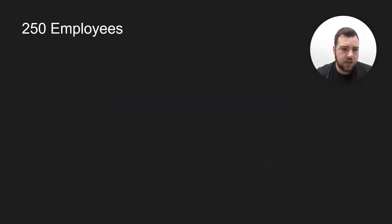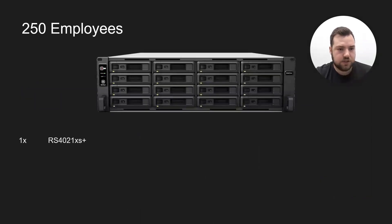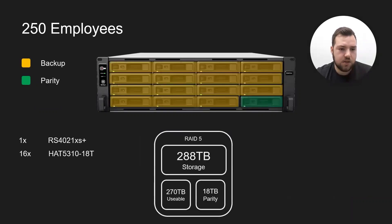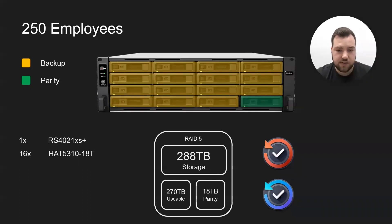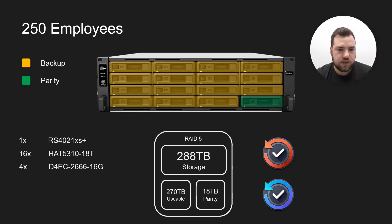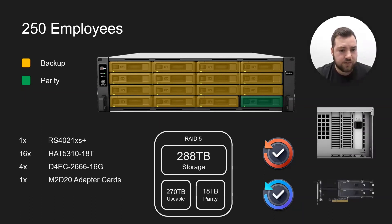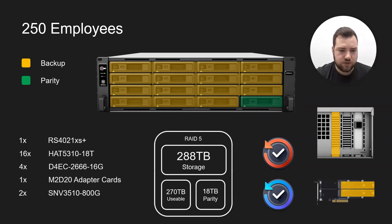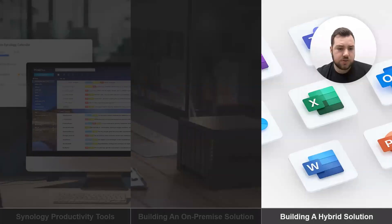For the 250-employee backup system, we're using all 16 bays with 18 TB hard drives, giving 270 TB usable in RAID 5. Again using Active Backup for Microsoft 365 and Active Backup for Business to back up 365 tenants and the main NAS. 64 GB RAM so it can serve as a failover, the M.2 adapter card and M.2 SSDs for fast retrieval when restoring backed-up data to the live server, plus the rail kit.